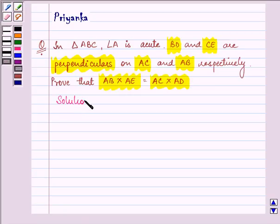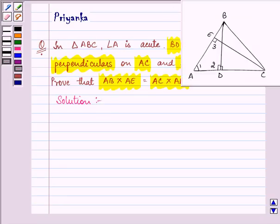So here, let us have a diagram to model this situation. We have a triangle ABC where A is an acute angle. Let it be angle 1.